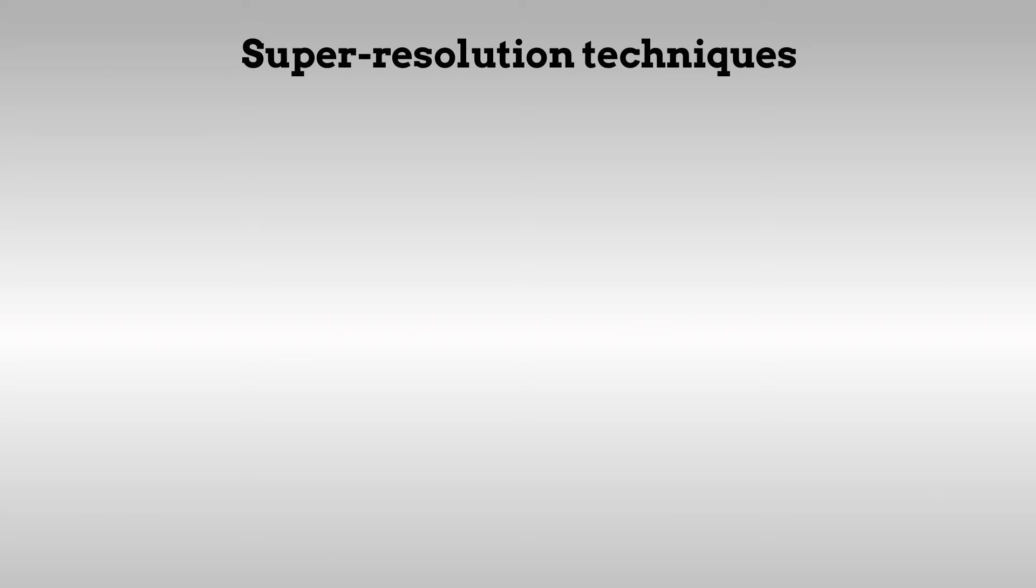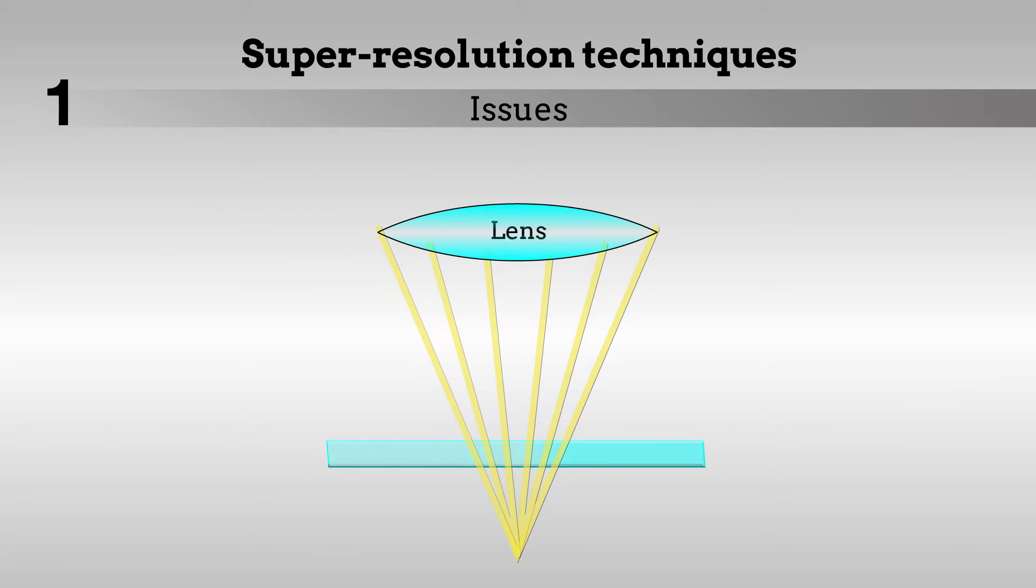Super-resolution techniques generally suffer from three issues. First, the resolution along the depth of the sample, called the axial resolution, is worse than that along the plane of the microscope slide, called the lateral resolution.